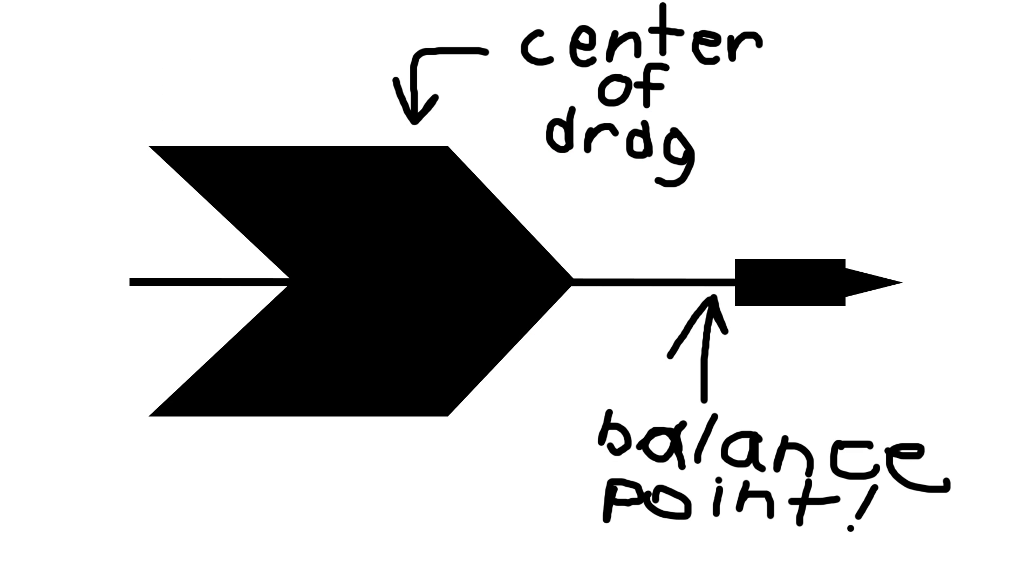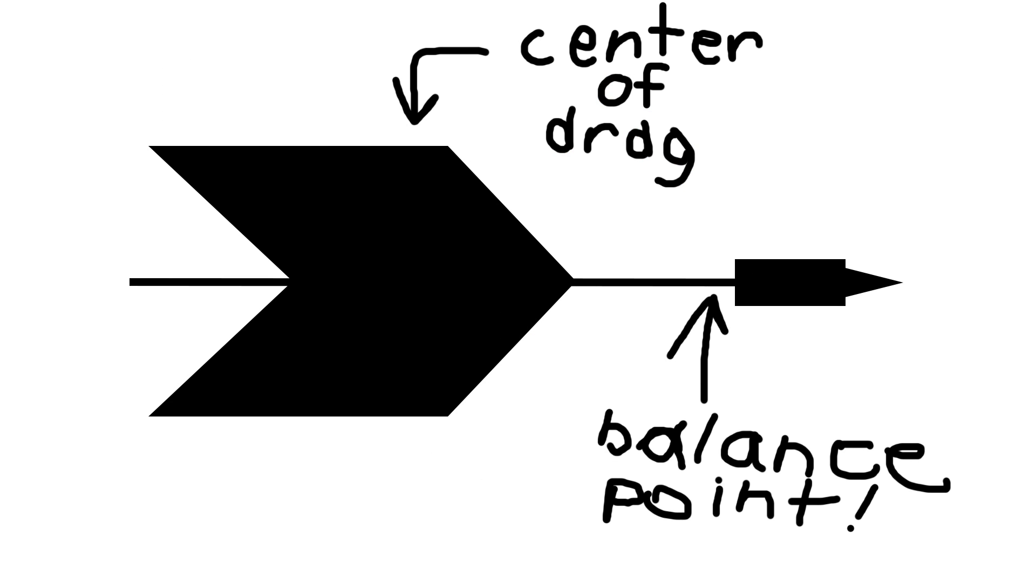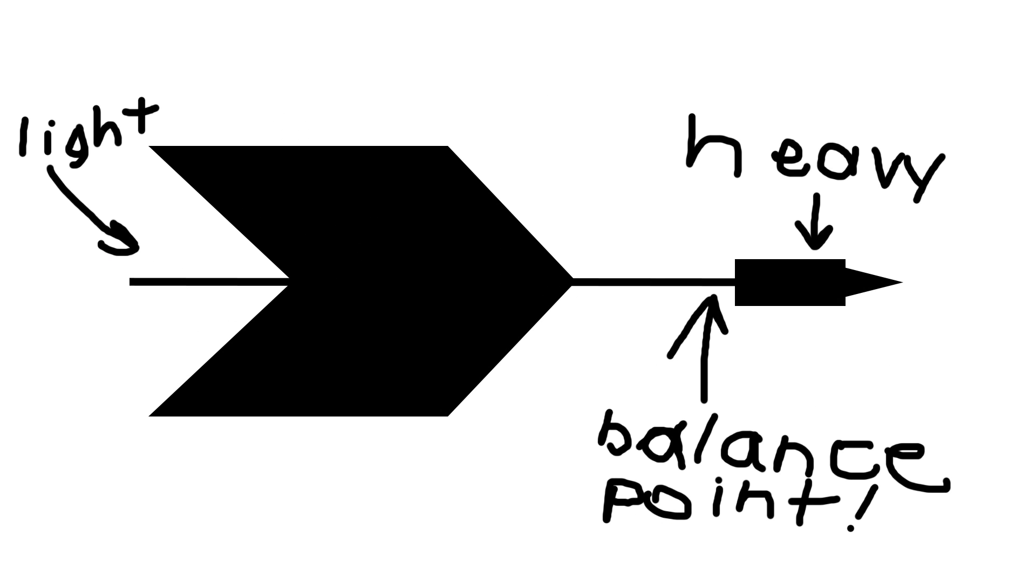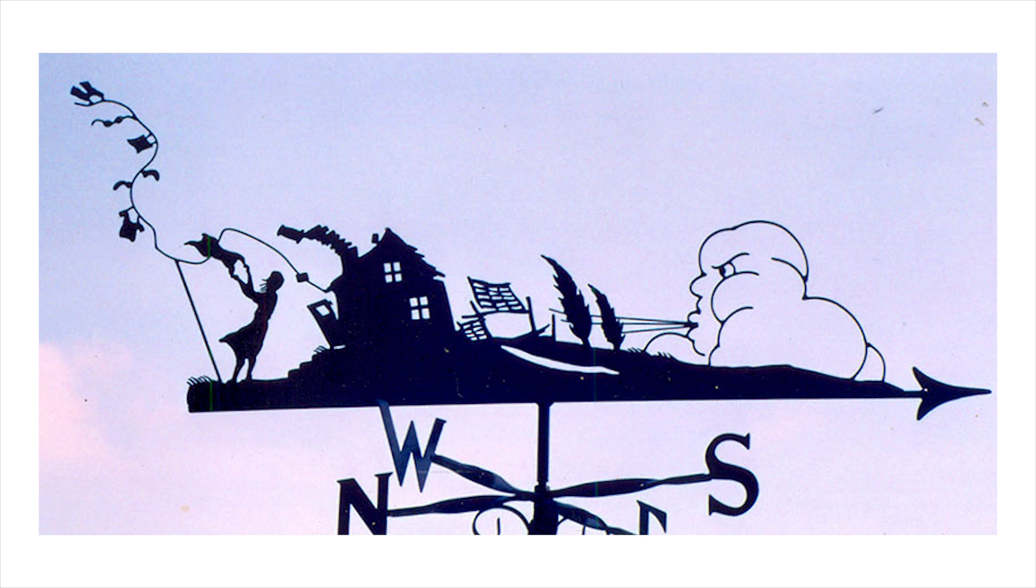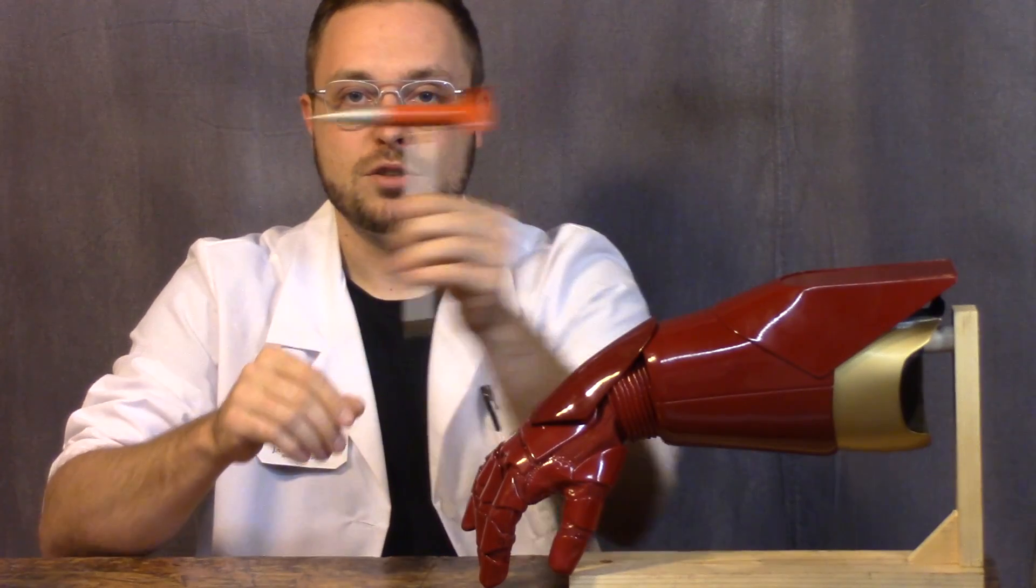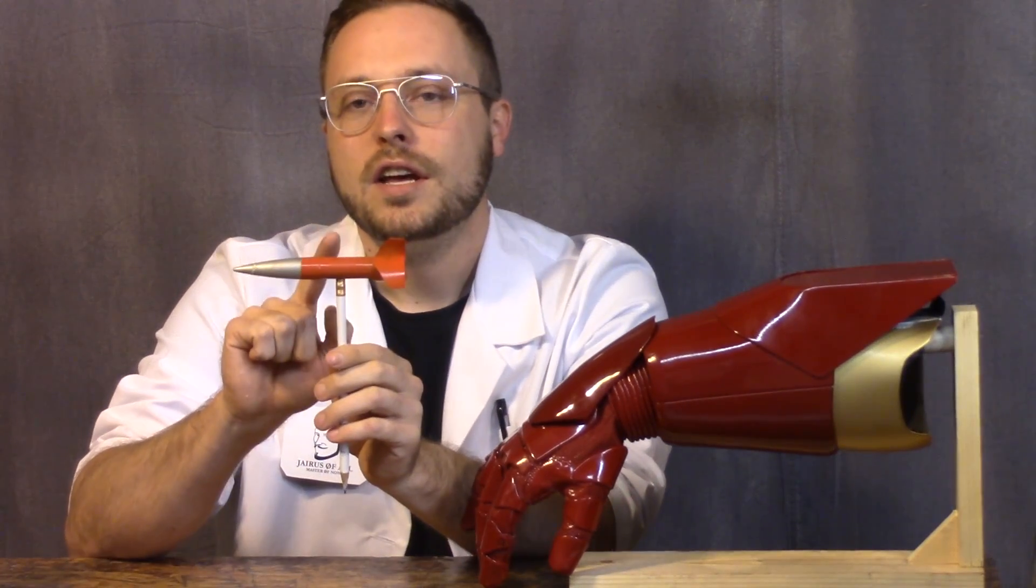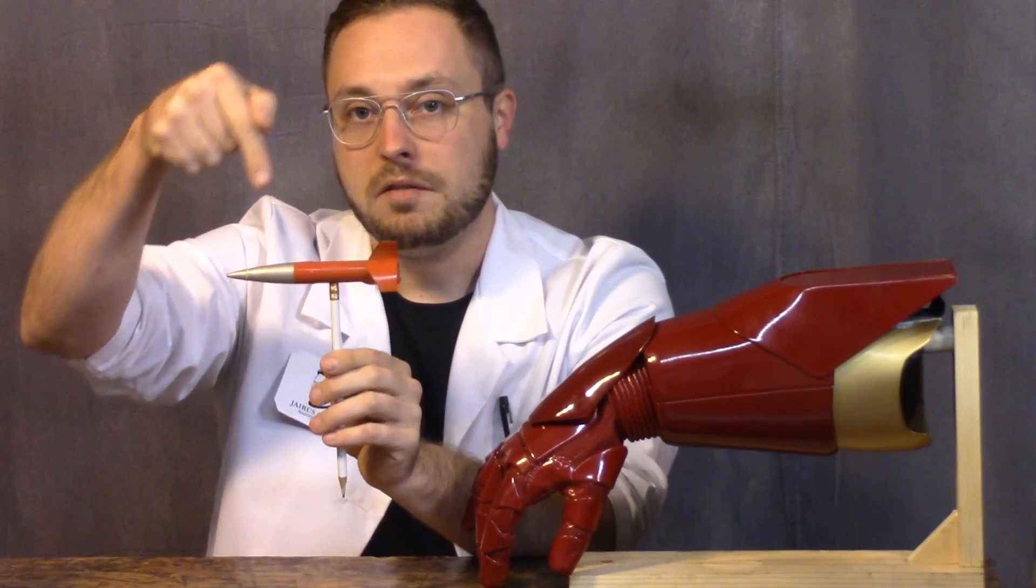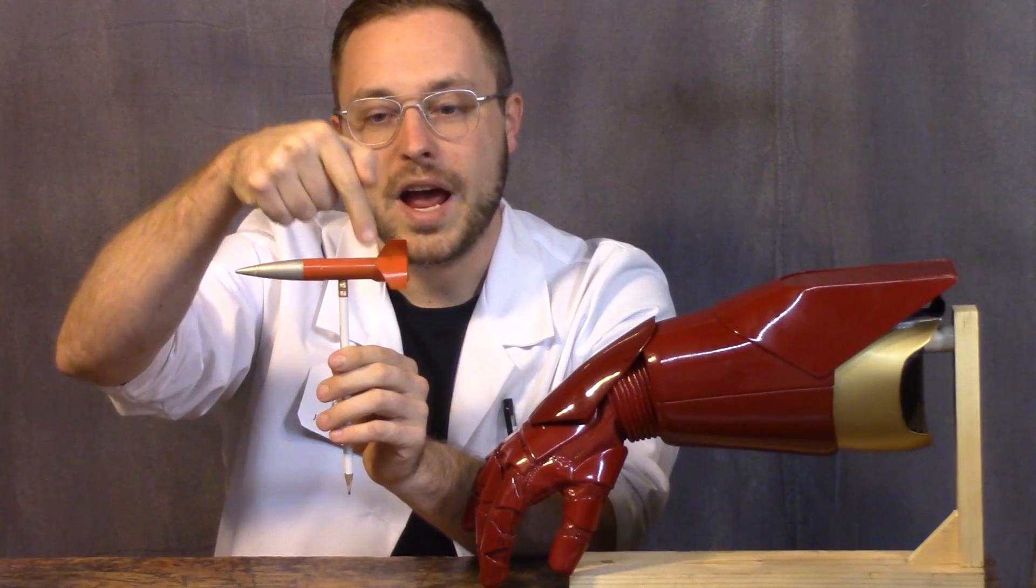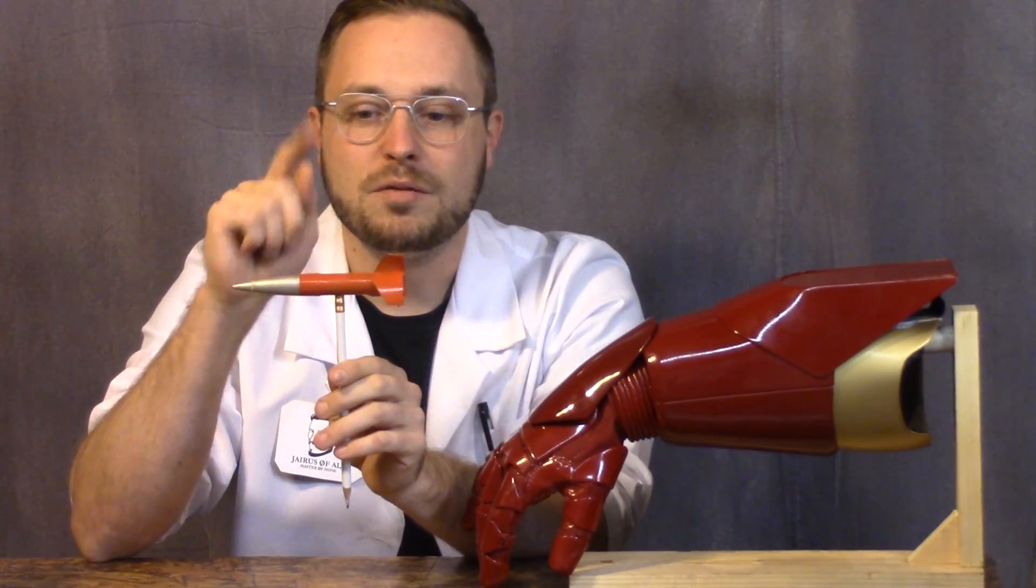That's why when you throw a lawn dart almost no matter what, it points the direction it's traveling, because all of the drag is at the back and all of the weight carrying it forward is at the front. Just like a wind vane. That's why a wind vane wants to point into the wind. So you want the rocket to fly straight forward. The further the center of gravity is in front of the center of drag, the more stable the flight is of the rocket.